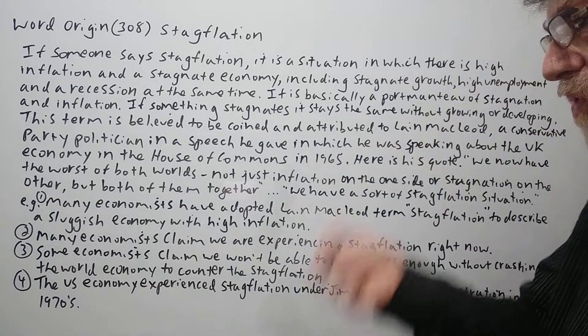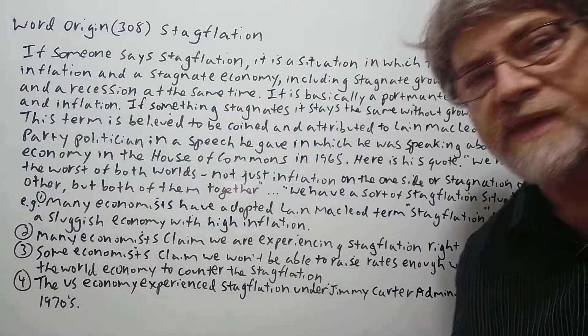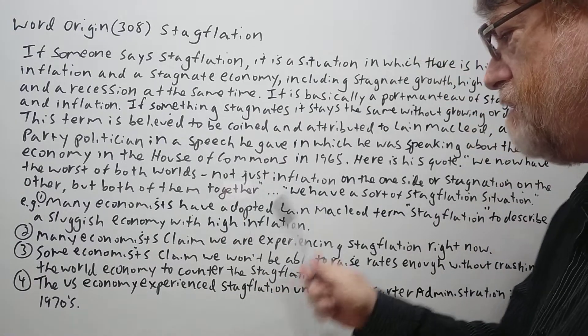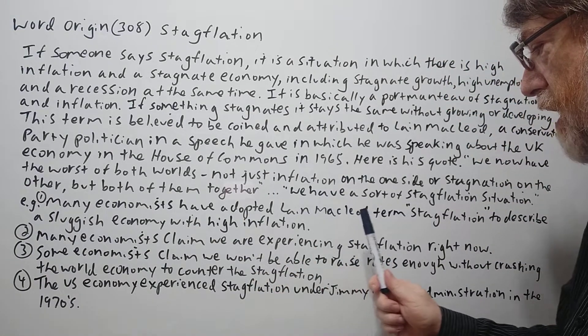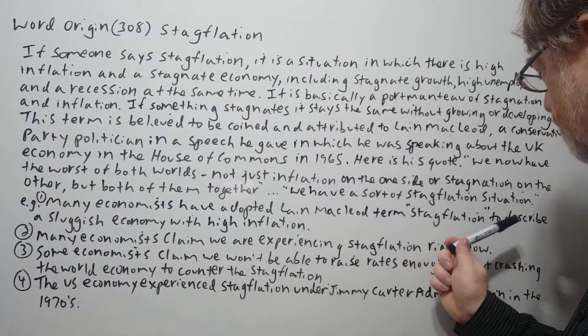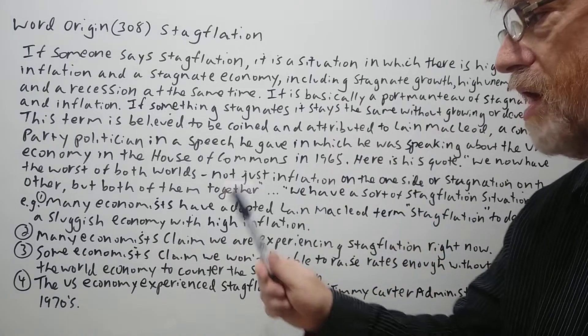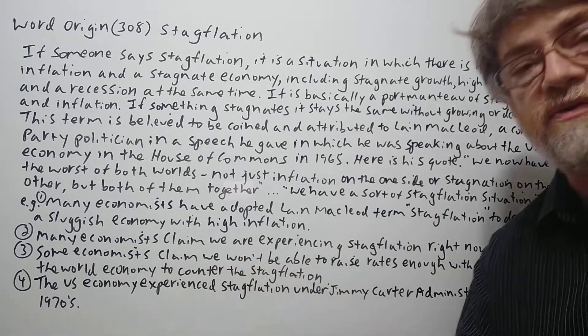Now we have four examples of the way you may hear it. Number one: Many economists have adopted Iain Macleod's term stagflation to describe a sluggish economy with high inflation.